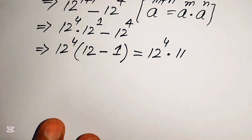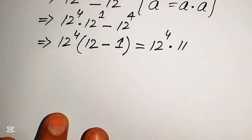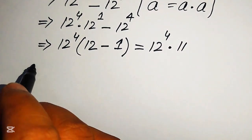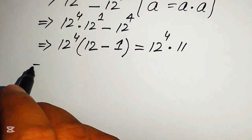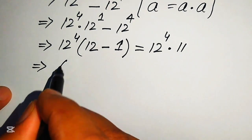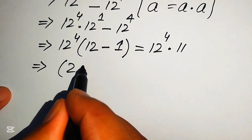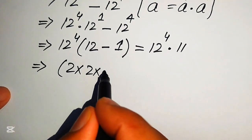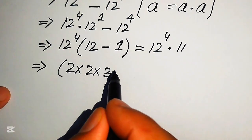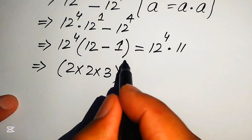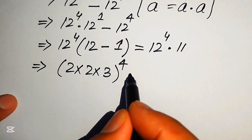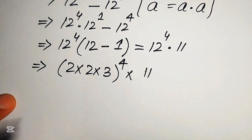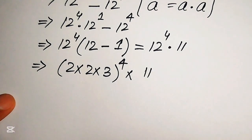Now we find the prime factors of 12. The prime factors of 12 are 2 multiplied by 2 multiplied by 3, and its whole power is 4, multiplied by 11.